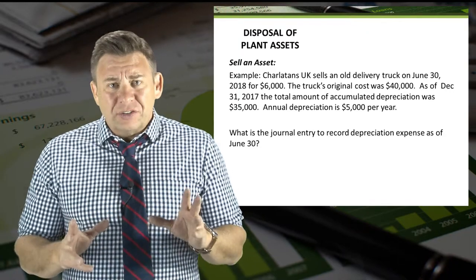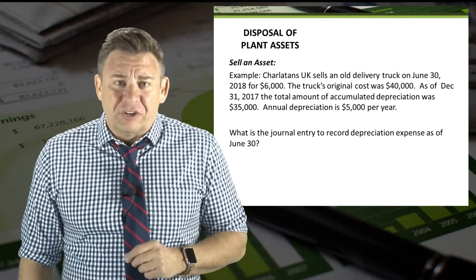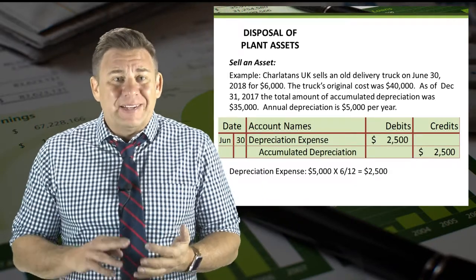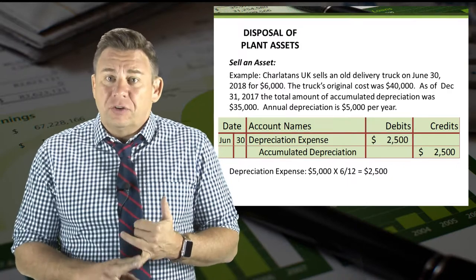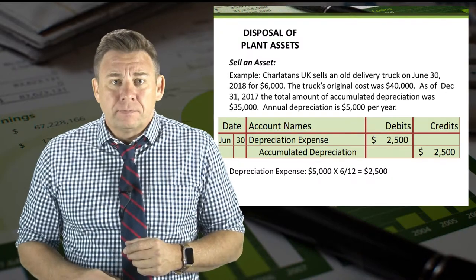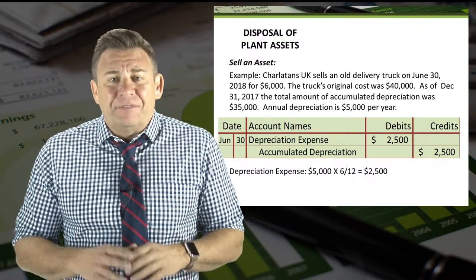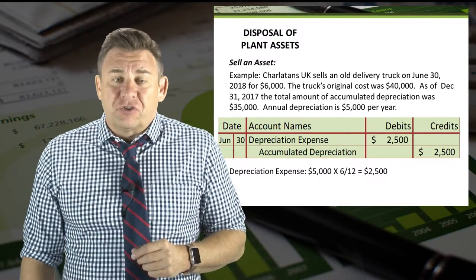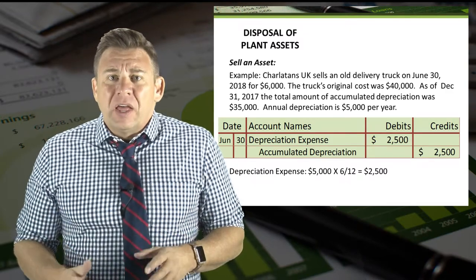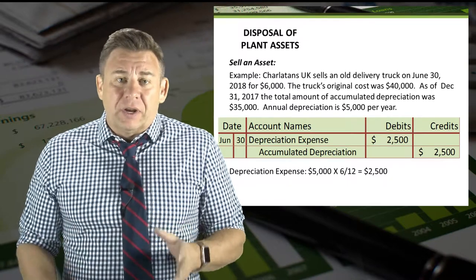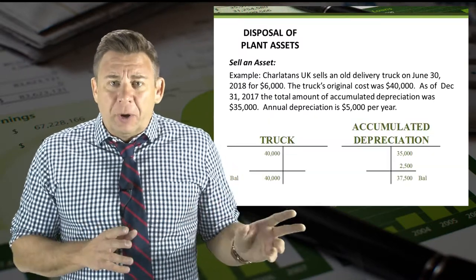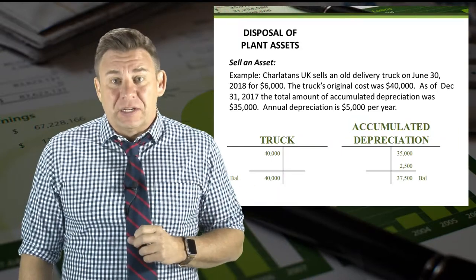So let's first get the depreciation up to date. The adjusting entry to record depreciation expense is a debit to depreciation expense and a credit to accumulated depreciation. In this example, the annual amount of depreciation on the truck is $5,000, and we need to depreciate it for half a year, so the amount to be recorded is $2,500.